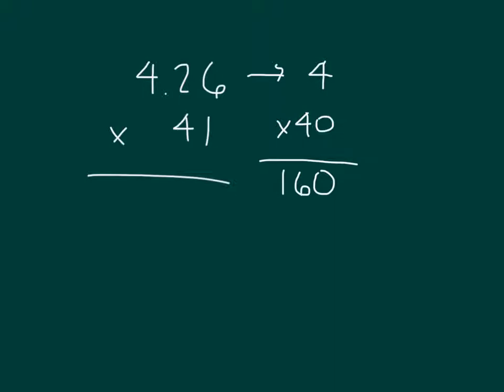Next, we'll take a look at this factor right here, 4.26. That's 4 and 26 hundredths. What we want to do is think about that as hundredths. How many hundredths would that be? Right, 426 hundredths. So really what we're doing here is multiplying 426 hundredths by 41. And in this case now we're dealing with whole numbers. 426 times 41, and then we can go through that process with that standard algorithm.